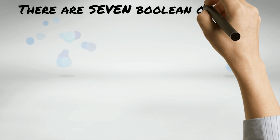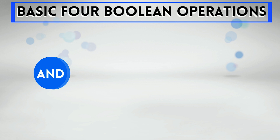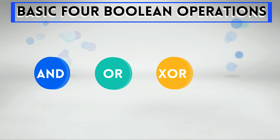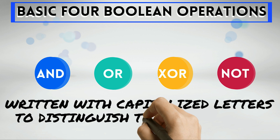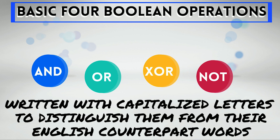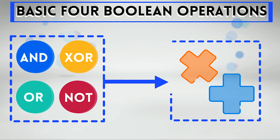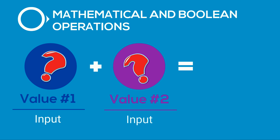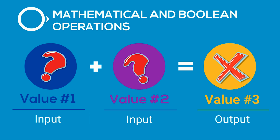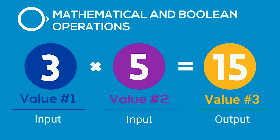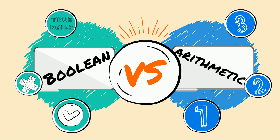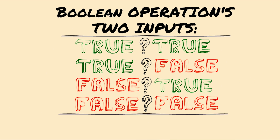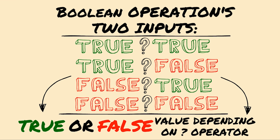There are seven Boolean operations. However, I only need to discuss the basic four — AND, OR, XOR (referred to as exclusive OR), and NOT — to illustrate all of this. Boolean operation names are usually written with capitalized letters to distinguish them from their English counterpart words. These operations are similar to the arithmetic operations times and plus, because they combine a pair of values as input to produce a third value as output. For example, 3 times 5 equals 15, or 3 plus 5 equals 8. In contrast to arithmetic operations, however, Boolean operations combine true or false values rather than numeric values as input, and produce either a true or false value as output.